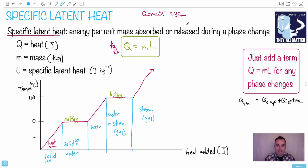But if you're going to deal with these kinds of questions in an IB format, you're probably just going to need to think about which one changed phase. Add a Q equals ML to that side of the Q lost equals Q gain equation, and there you go, you got it.